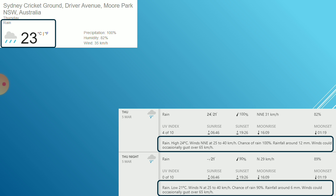As per the tournament rules, 10 overs a side is mandatory as compared to the previous five overs, meaning there should be at least a two-hour window to finish the game. In case of a washout there are no reserve days, so South Africa would go into the finals as they topped the group, which could be a very heartbreaking scenario for the Australian women's team.